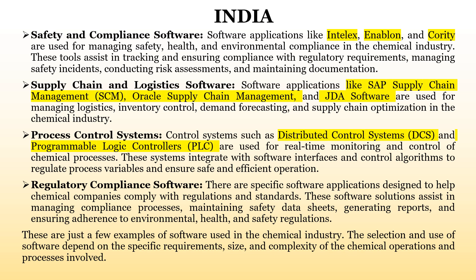The fifth one is safety and compliance software, used for managing safety, health, and environmental compliance in chemical industries. Applications such as Intellects and Operational Priority help manage regulatory requirements and safety incidents, avoid safety incidents, and conduct risk assessments, as well as handle automated documentation with respect to employees, employers, and interns working in the industries.